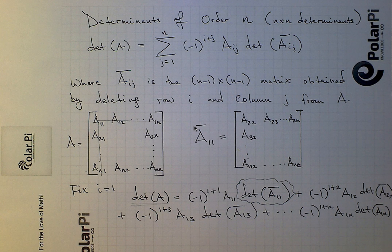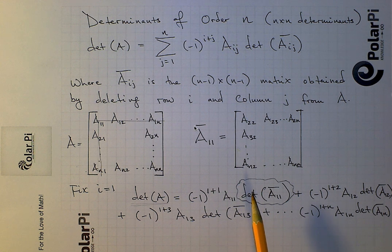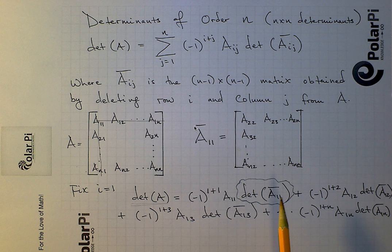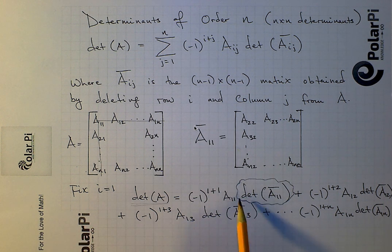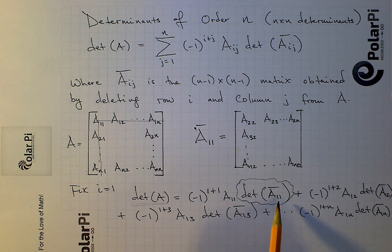So when you're finding the determinant of an n by n matrix, you would have to find the determinant of n minus 1 by n minus 1 matrices. And how do you do that? Like, how would you find the determinant of A11 bar? Through the same process. So, this is kind of like one of those Russian dolls, which is like, you peel a layer, and there's another layer inside it, and so on.